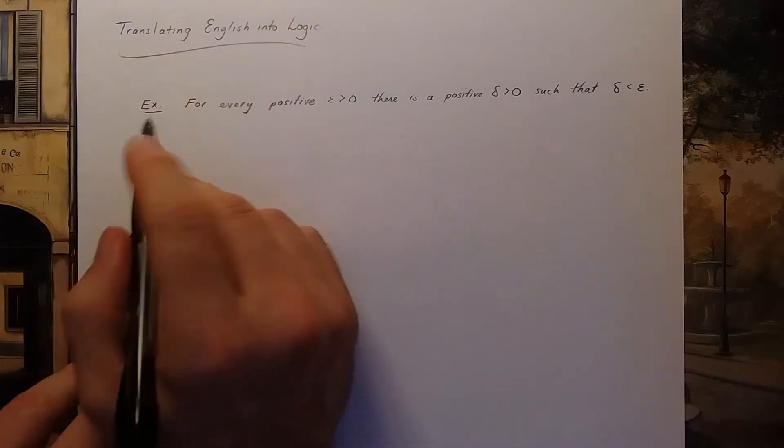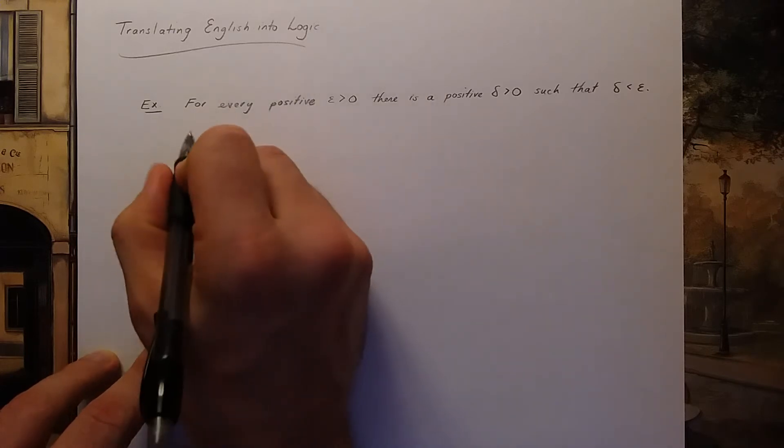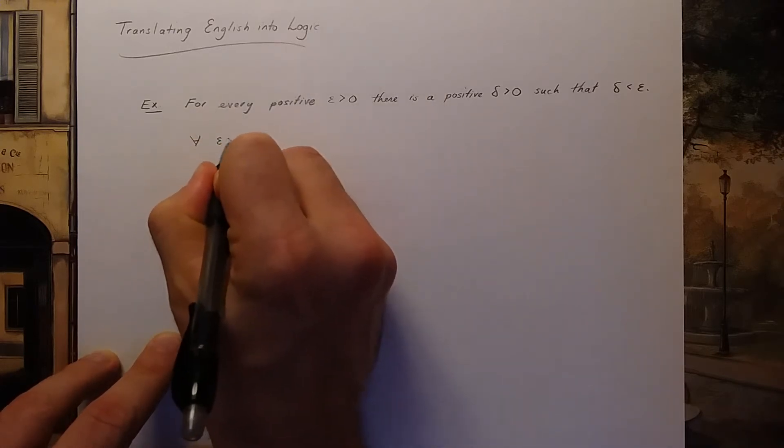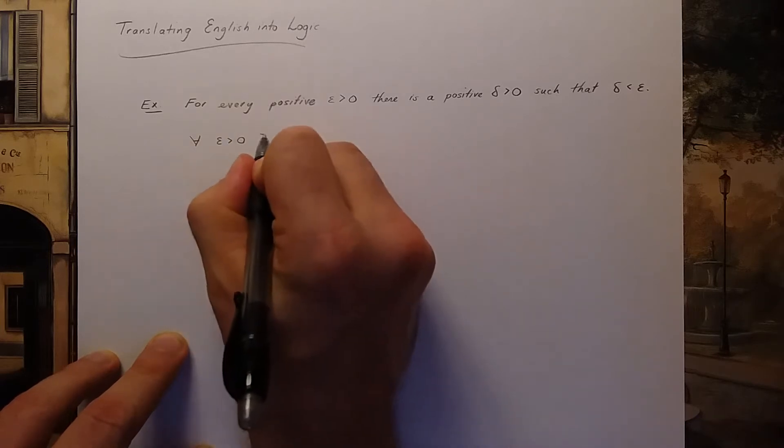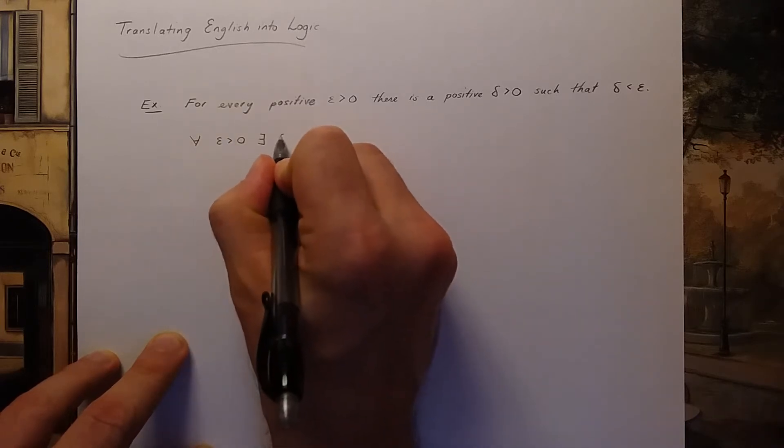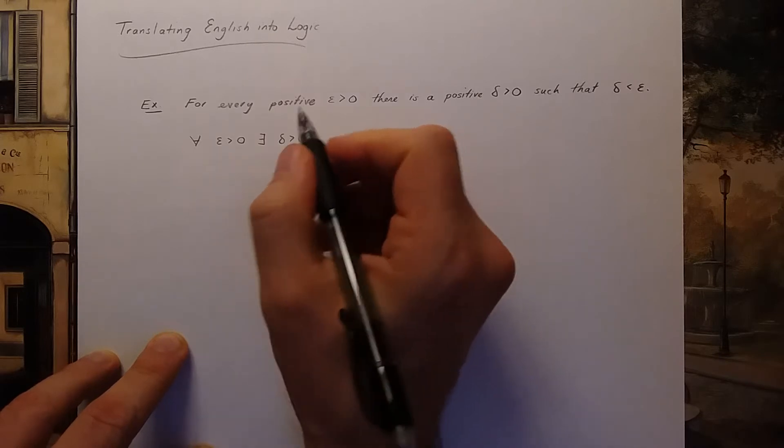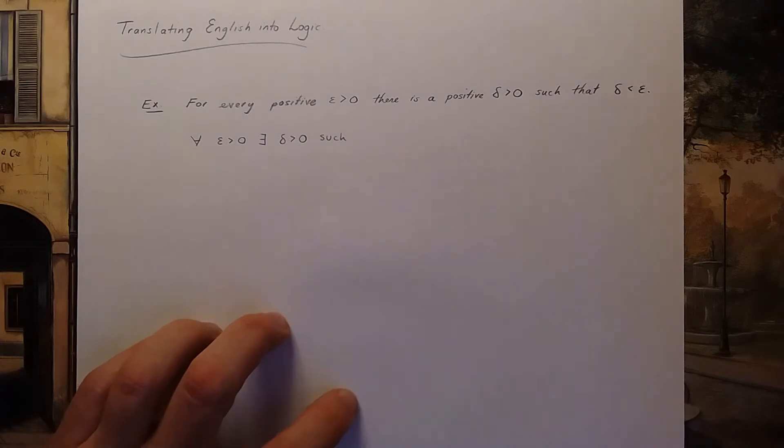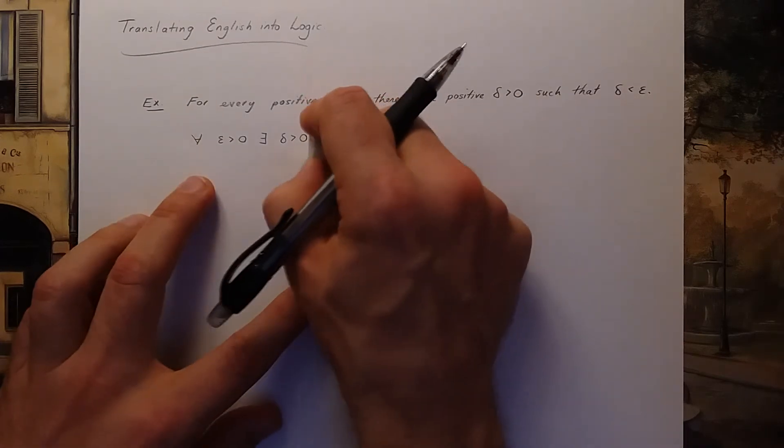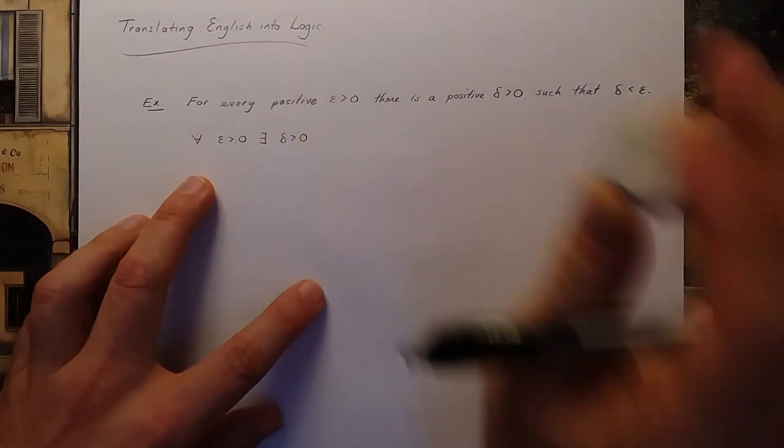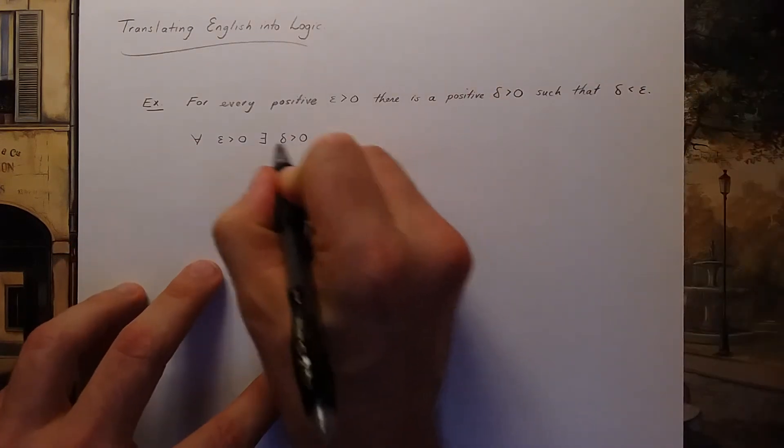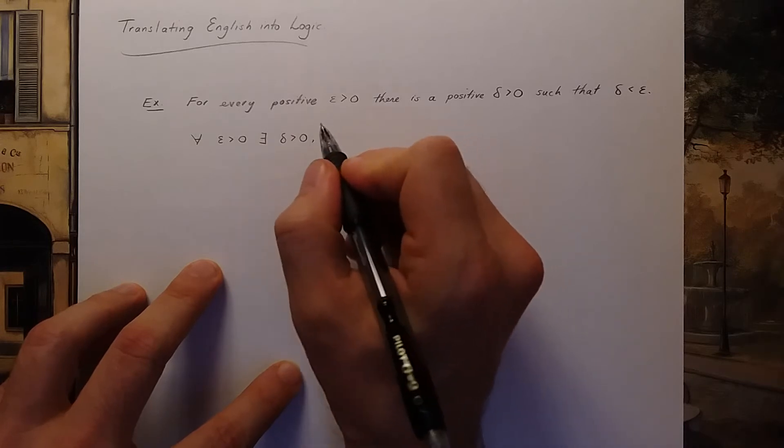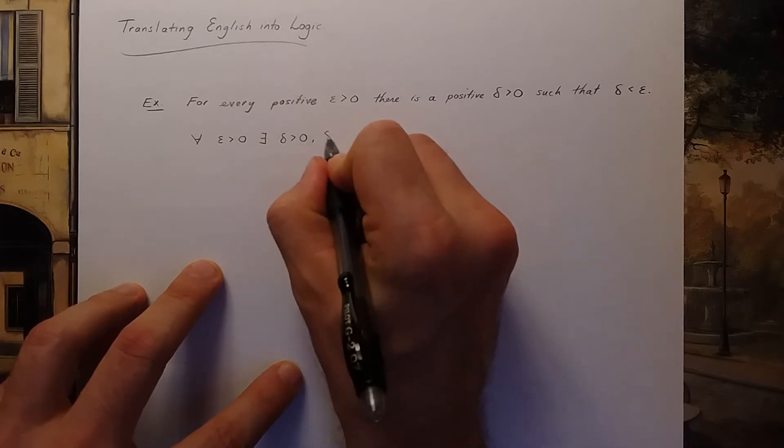If I were going to translate this into logic symbols I would say for every epsilon bigger than zero there exists a delta bigger than zero such that—actually instead of saying such that sometimes we just write a comma to continue the logic sentence. So for every epsilon bigger than zero there exists a delta bigger than zero such that delta is less than epsilon.